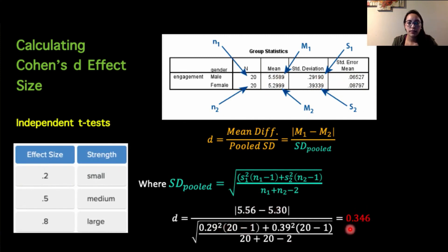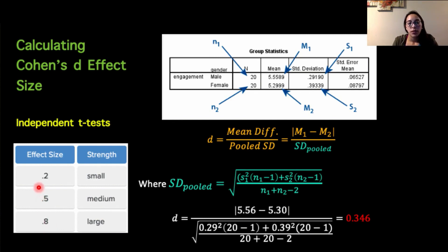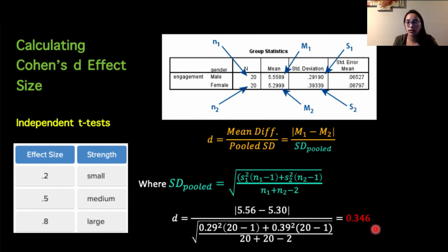Generally speaking, we gauge our effect sizes off of these values: an effect size of 0.2 is considered small, 0.5 is considered medium, and 0.8 is considered large. In this case, 0.346 is a little bit closer to 0.2, so I would say we have a small, or relatively small, effect size for this particular example.